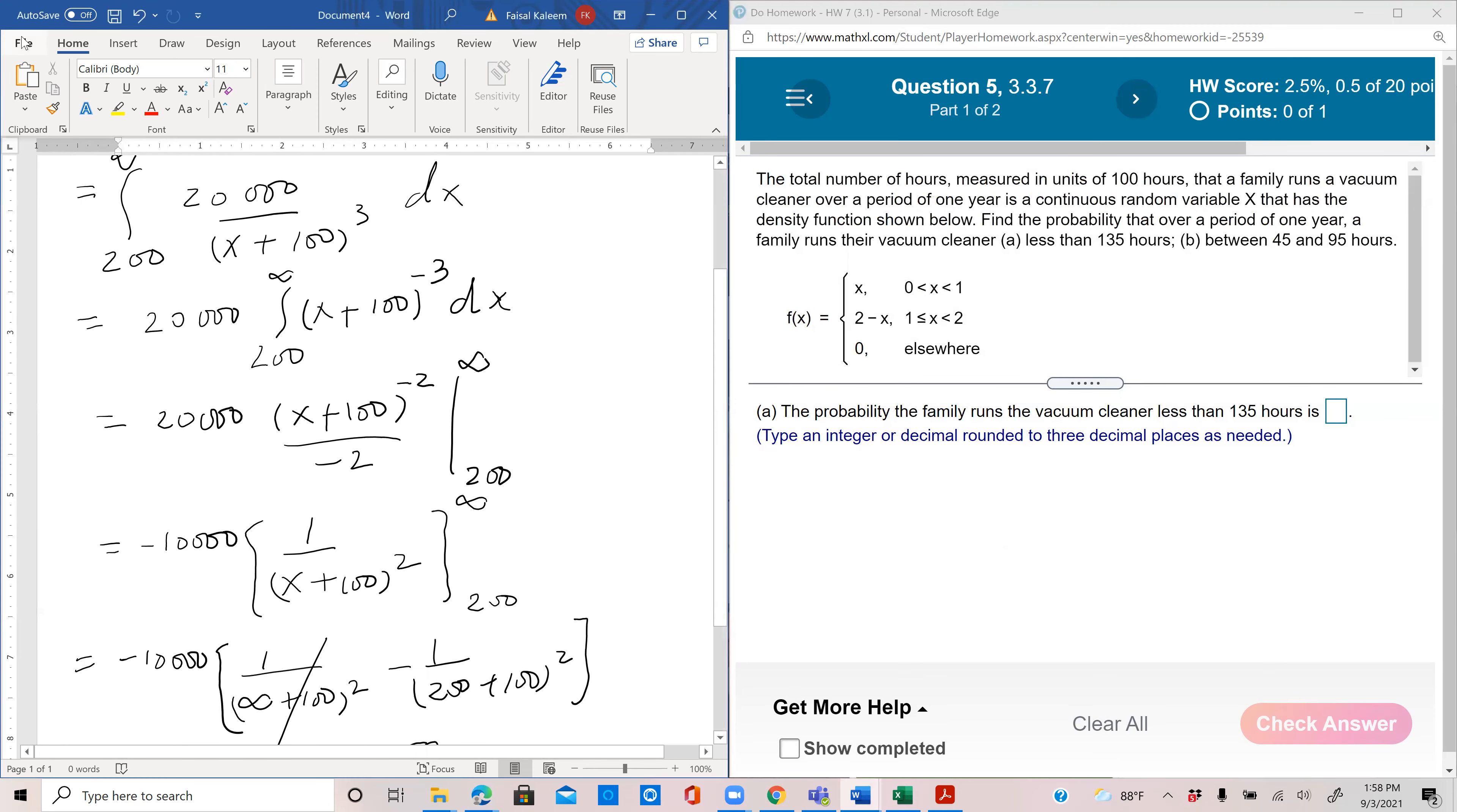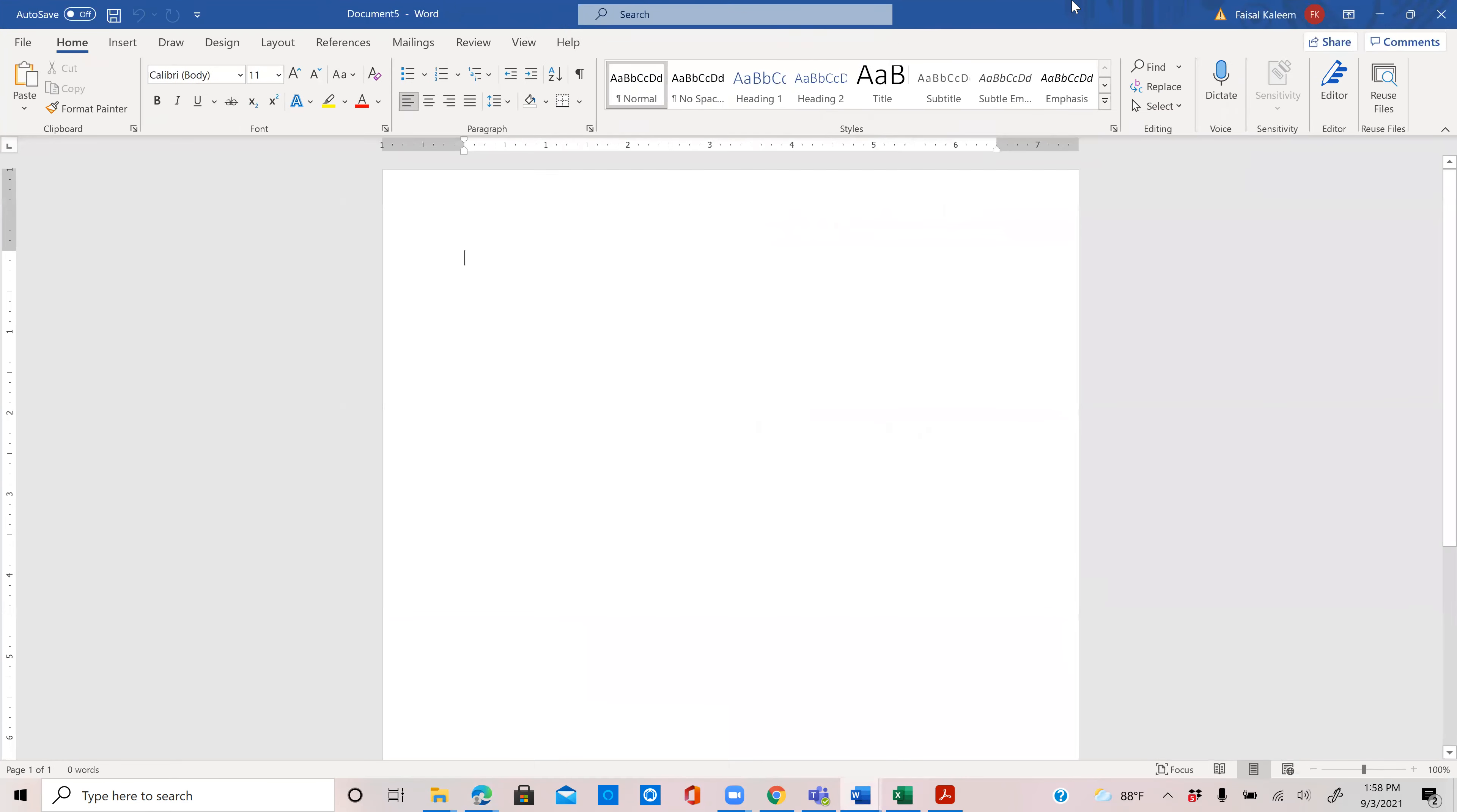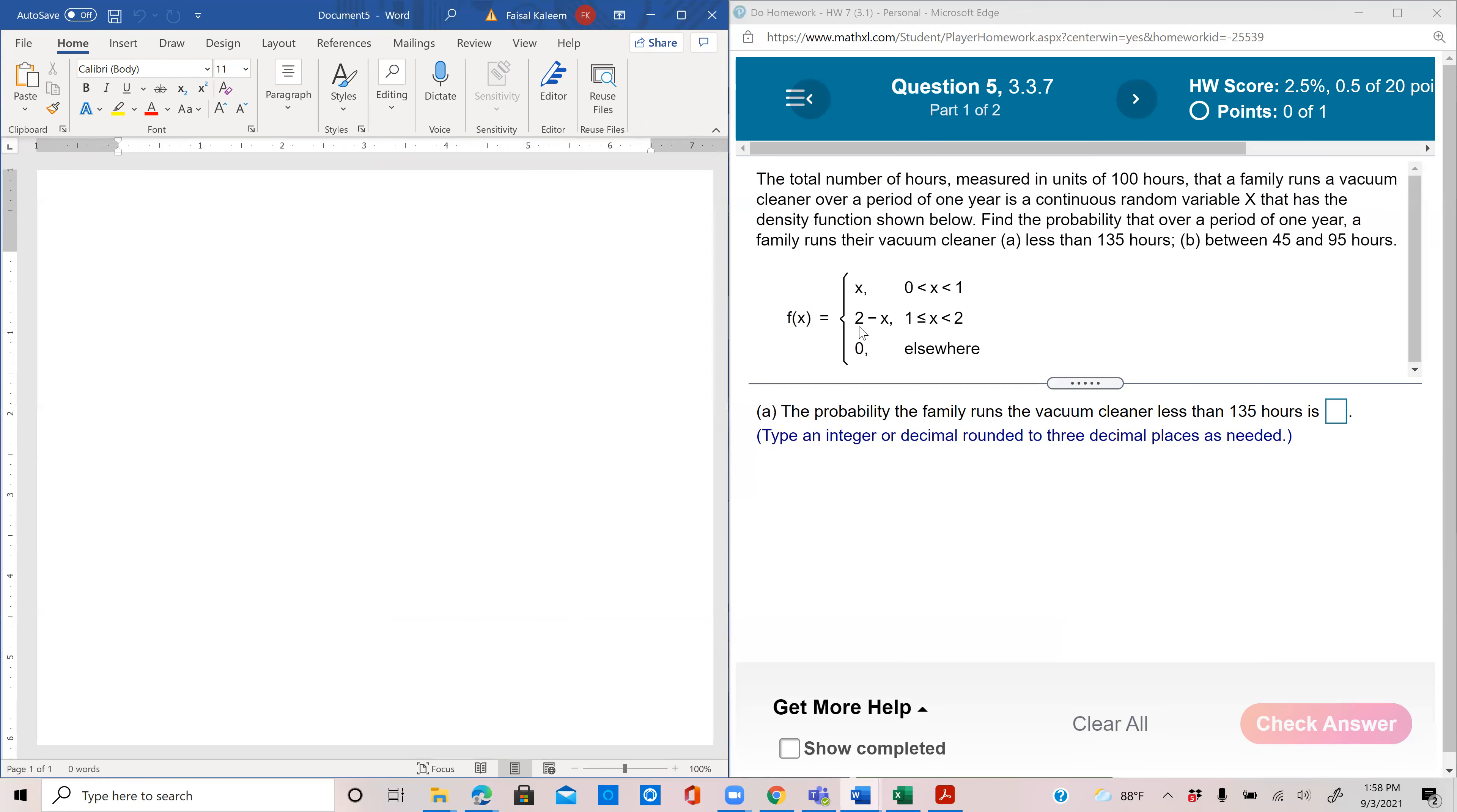The total number of hours, measured in units of 100 hours, that a family runs a vacuum cleaner over a period of one year is a continuous random variable x that has the density function shown below. Find the probability that over a period of one year, a family runs their vacuum cleaner less than 135 hours.